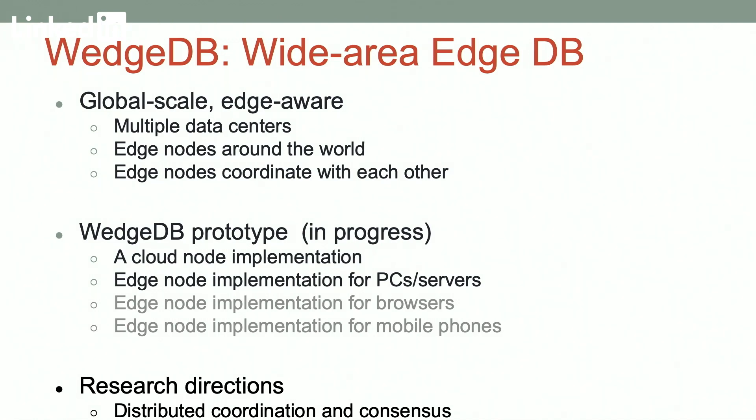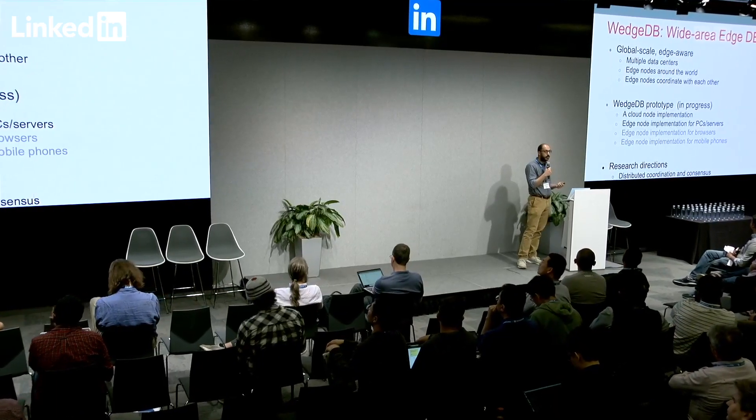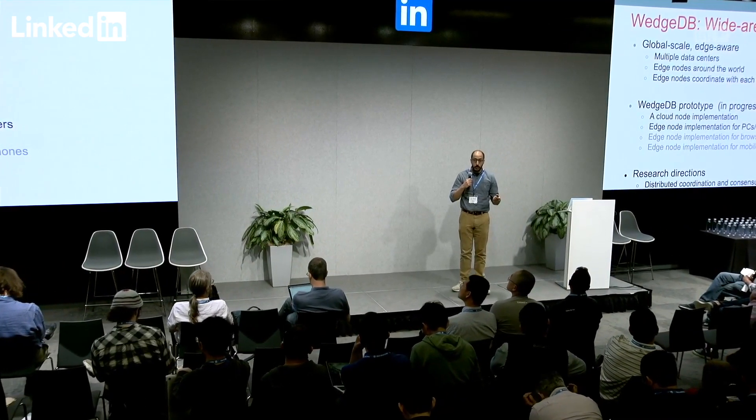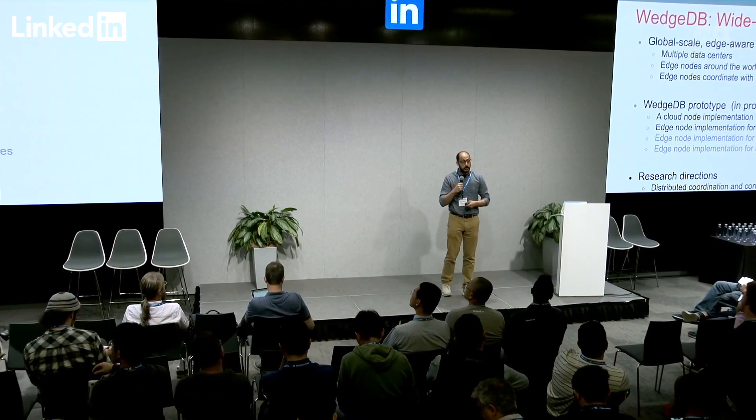What this is helping us to do is understand the different research directions entailed in building these new databases. This involves many questions about how we do distributed coordination and consensus in this new environment with a large number of nodes that are far away from each other. There are also questions about trust — if I'm relying on more edge devices and end nodes, maybe I don't trust these devices, so I may need more stringent fault tolerance, something like a Byzantine agreement requirement. And we're also dealing with issues about distributed indexing, which can be more challenging when dealing with all these small devices.